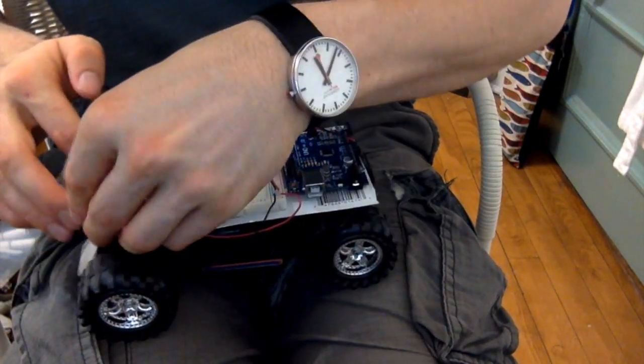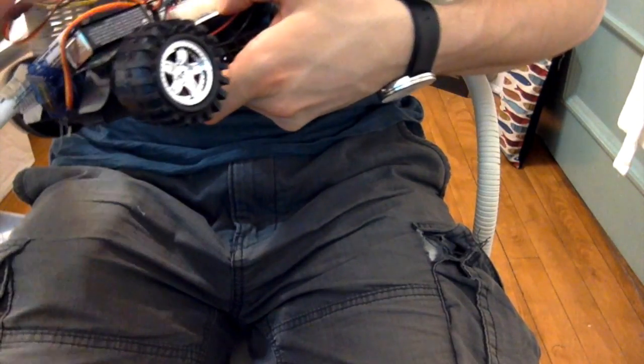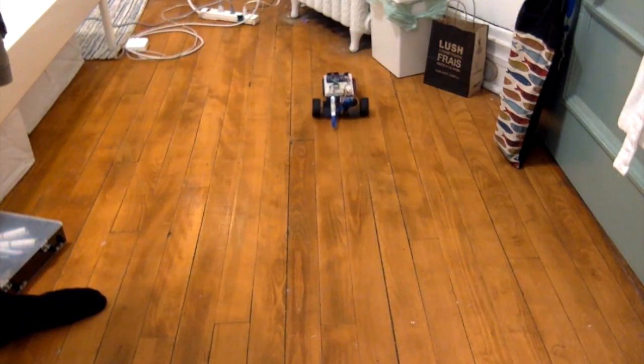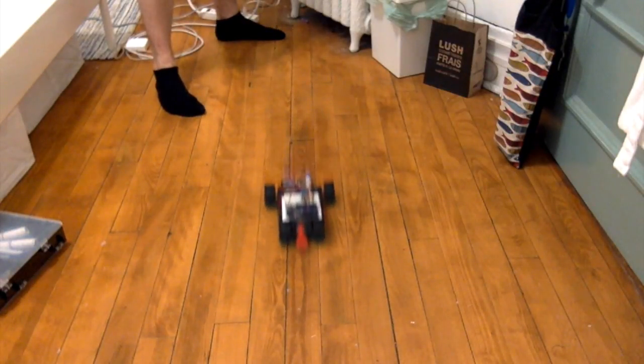After attaching a battery to the contraption, when we flip the switch, the wheels turn. And here's a test run on the ground. I've attached an eraser to the front to modulate the speed a little bit.